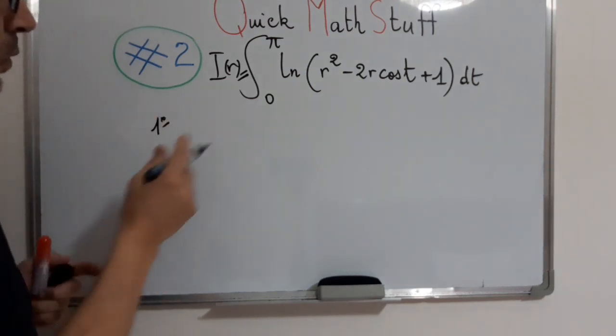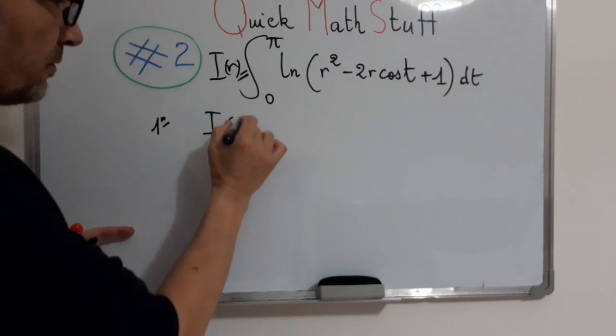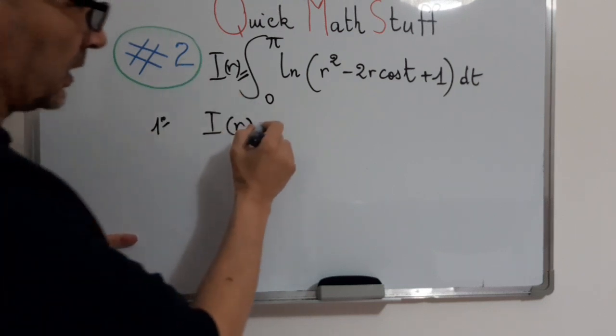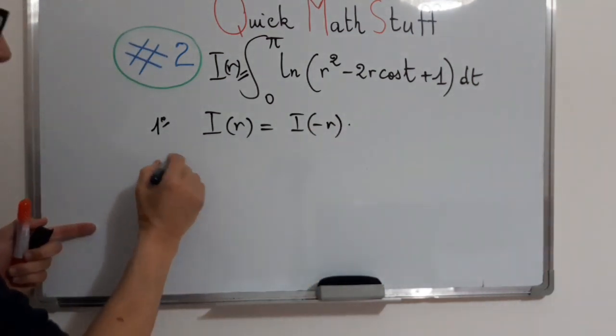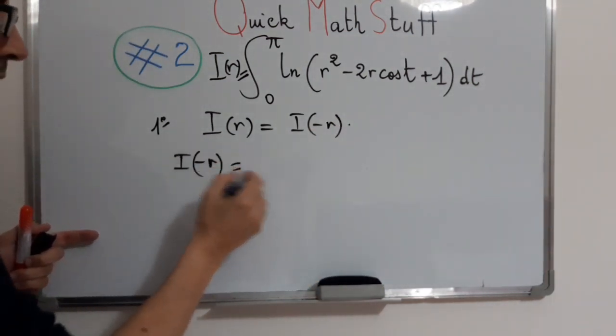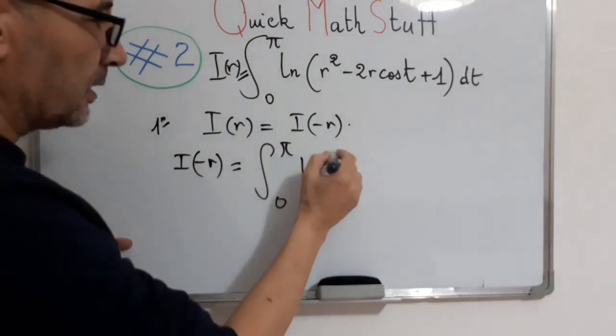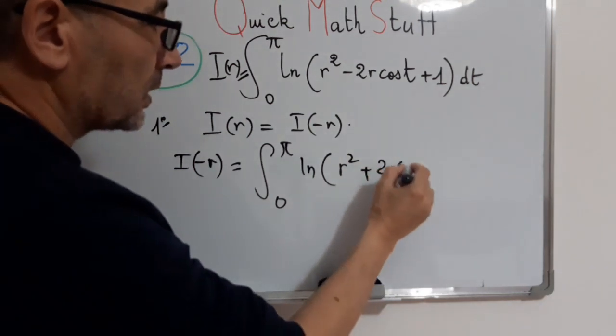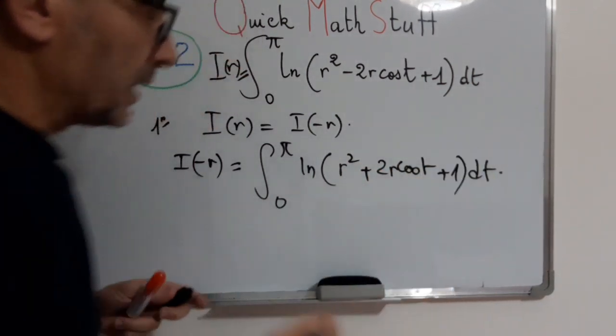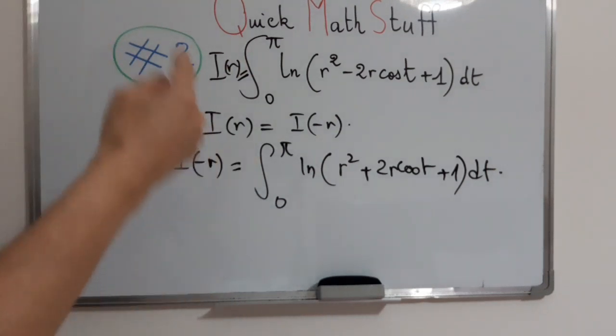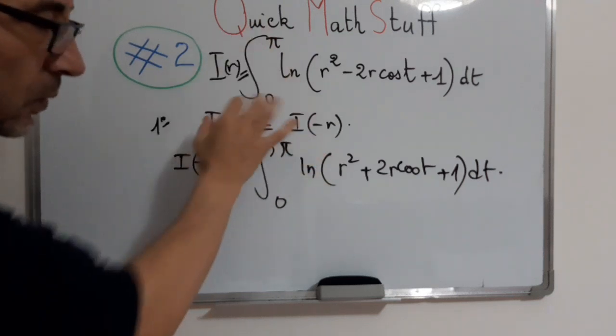First step, we'll prove that this integral is an even function in terms of r. It's easy to do this. I of minus r equals integral from 0 to π of ln of r squared minus 2r cos t plus 1 dt. Now please take one minute to prove that this is also equal to I of r.